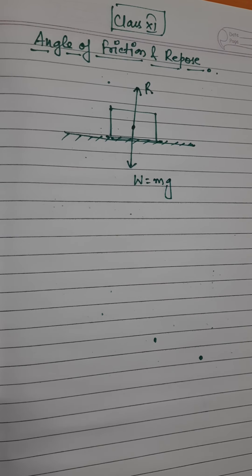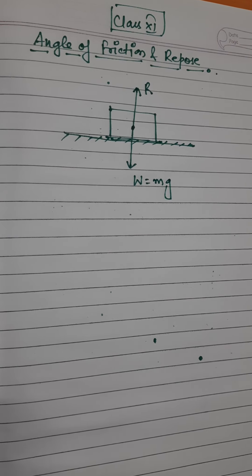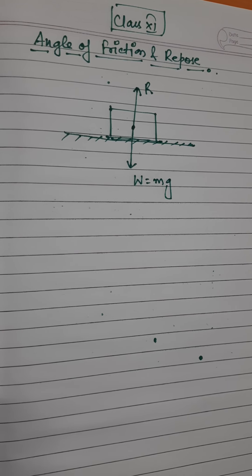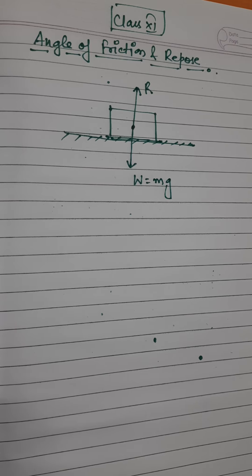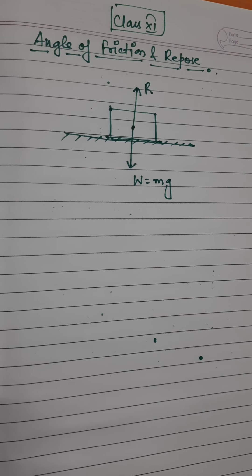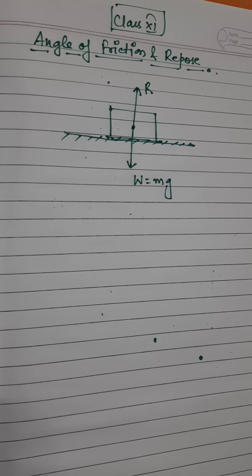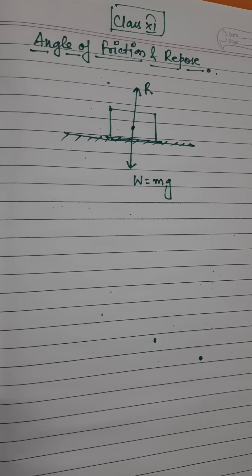So what is the angle of friction? The angle of friction between any two surfaces in contact is defined as the angle which the resultant of the force of limiting friction F and the normal reaction R makes with the direction of the normal reaction R.